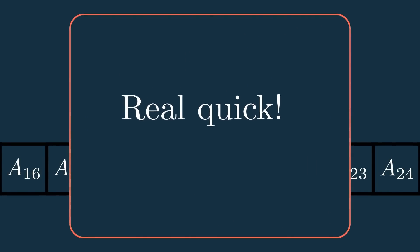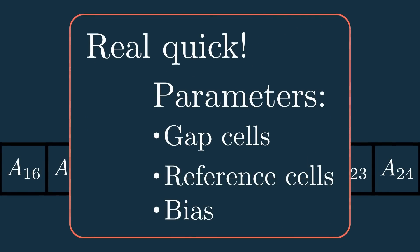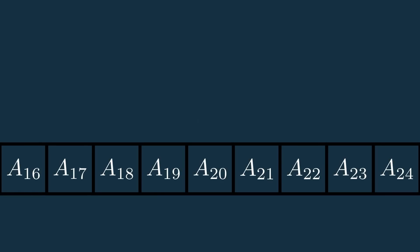Real quick though, for all the CFAR parameters I'm about to introduce, I'll talk more about how you choose their values in a minute. And in the description is a Python notebook where you can play around with the values yourself. This is our cell under test, or CUT, but some people also call it the cell of interest.